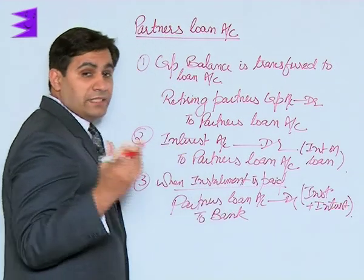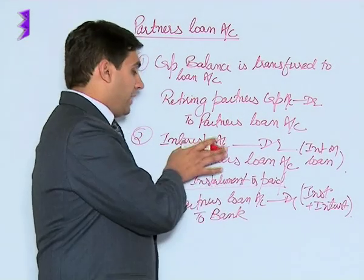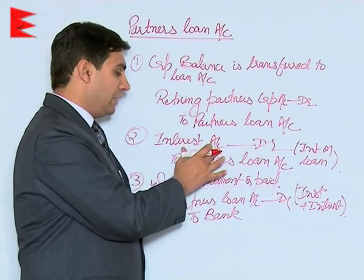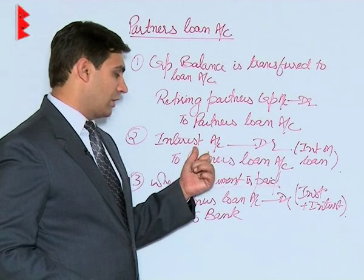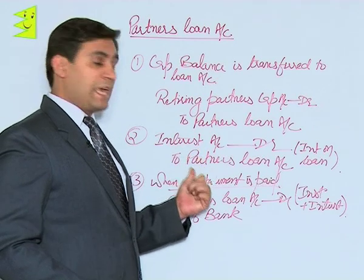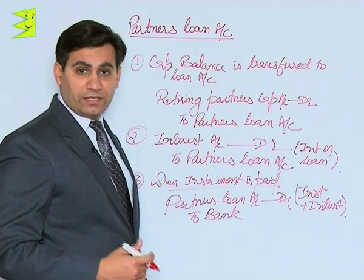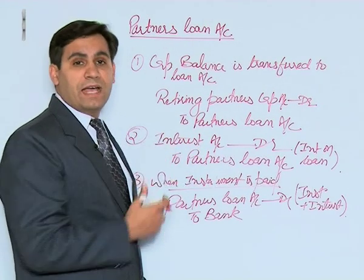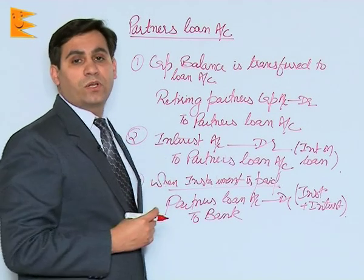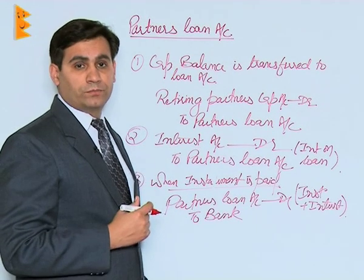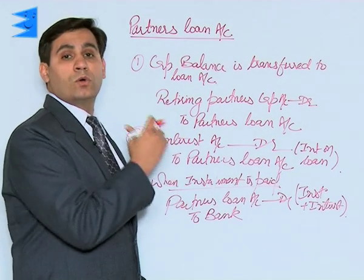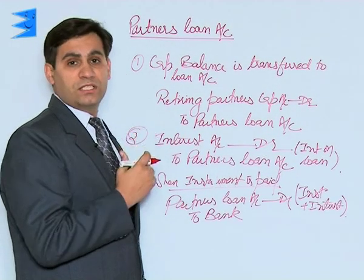And lastly, at the end of the year, since interest represents an expense, it is ultimately transferred to the profit and loss account. That is, the entry would be: profit and loss account debited to interest. It would be treated as a normal expense which is finally debited to the profit and loss account. Let us take an example to understand these entries and see how the loan account is prepared.